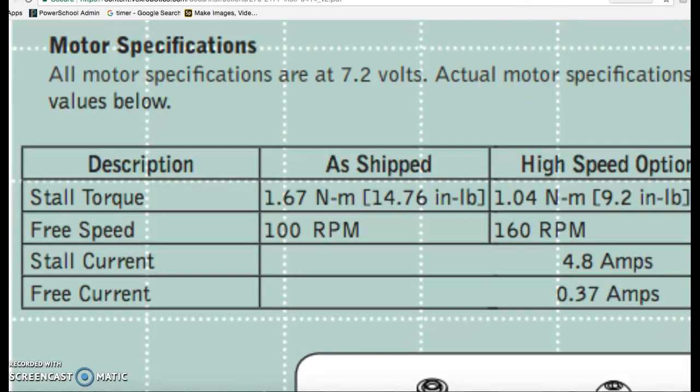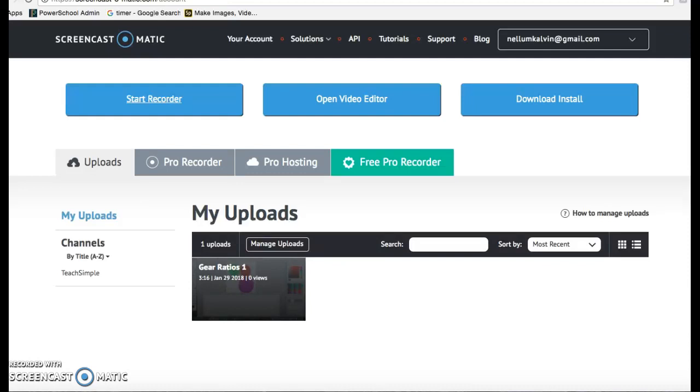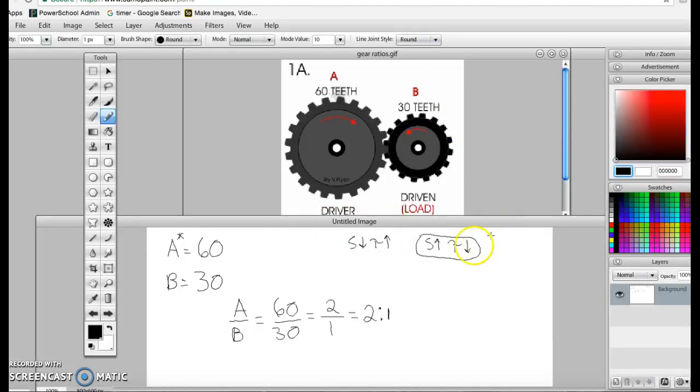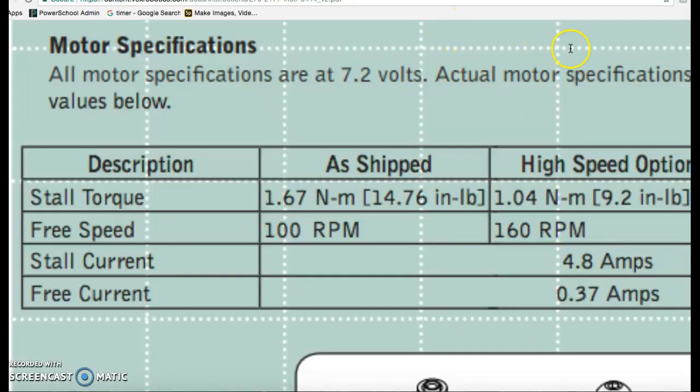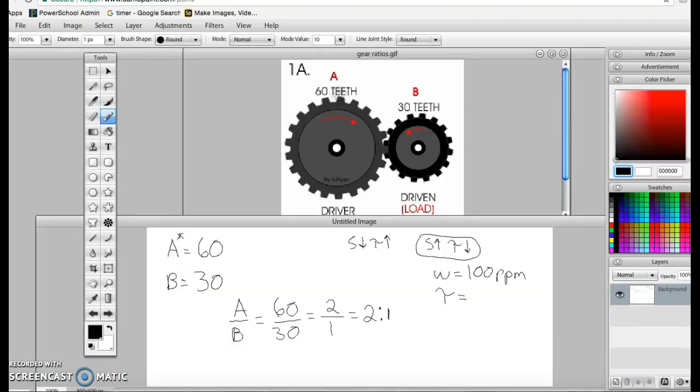That's what we're going to use to figure out the reduction or increase. So we go back. The angular velocity of the motor is going to be 100 RPM. And the torque is going to be 1.67 newton meters.